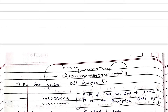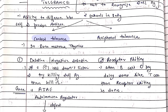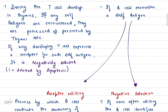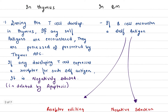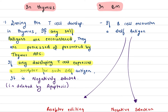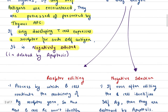There are two ways this occurs: central tolerance and peripheral tolerance. In central tolerance, during T cell development in the thymus, if any self-antigens are encountered, they are processed and presented by the thymus. If any developing T cell expresses a receptor for such a self-antigen, it is negatively selected — meaning it is deleted via apoptosis.